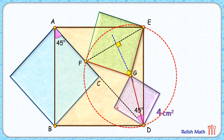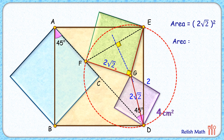The purple square has area 4 cm², so its side length is 2 cm and its diagonal length is 2√2 cm. Since GD is a radius and GE is also a radius, the side length of the green square — that is FG or GE — is 2√2 cm. The area of the green square is the side length squared, which gives 8 cm². That's our answer.